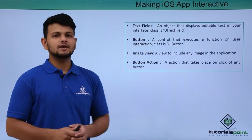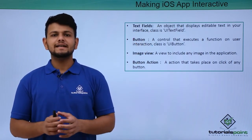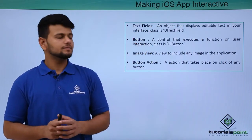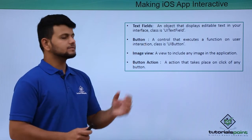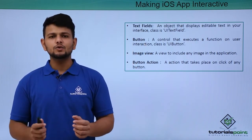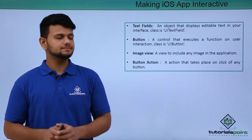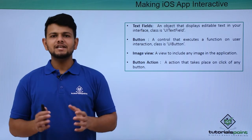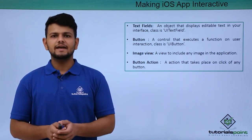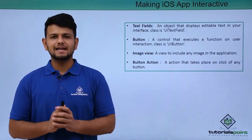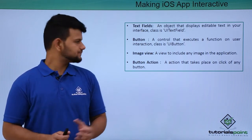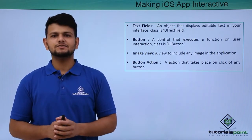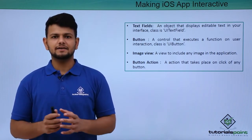Text field — a text field is an object that displays editable text. Button — a button is a control that executes a function. Image view — an image view is a view to include any image in our application. Button action — an action that takes place when a button is clicked.